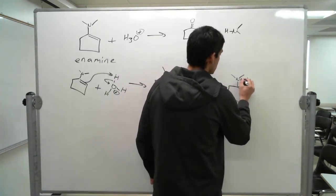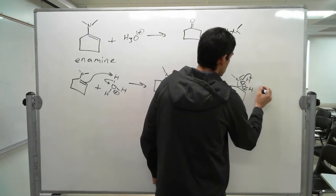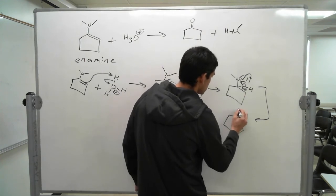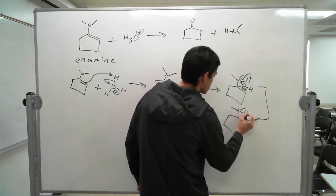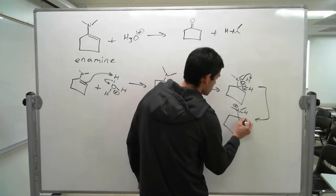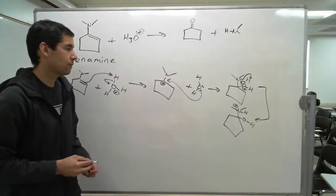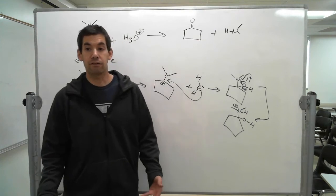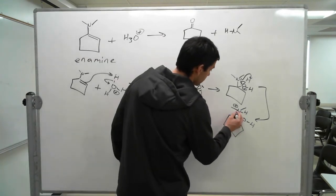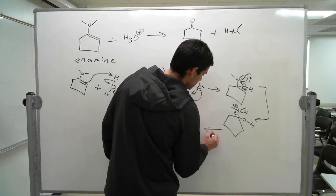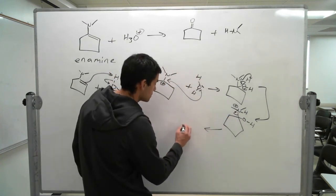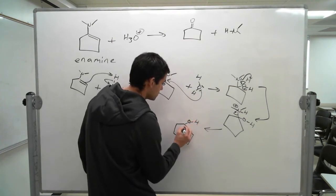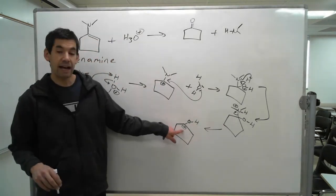The nitrogen is going to come from here. All right, so we're at this form now. We've done that proton transfer. Now nitrogen has a positive charge on it. It doesn't want to be positive charged. It's actually fairly stable now if it leaves, so it's going to leave. And by that leaving, we're going to generate that carbocation again.